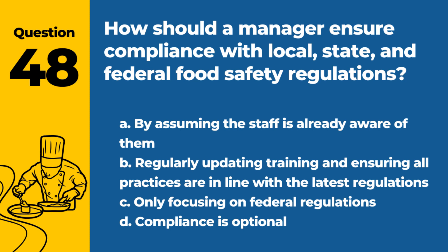Question 48. How should a manager ensure compliance with local, state, and federal food safety regulations? A. By assuming the staff is already aware of them. B. Regularly updating training and ensuring all practices are in line with the latest regulations. C. Only focusing on federal regulations. D. Compliance is optional. Answer: B. Staying informed and compliant with all levels of food safety regulations is crucial for legal operation.